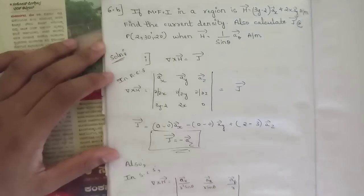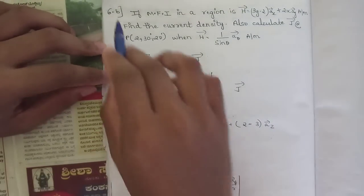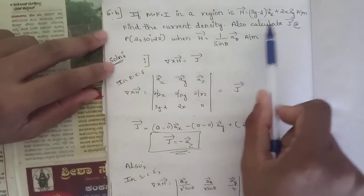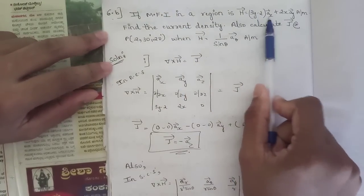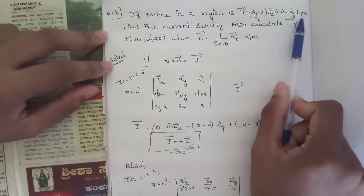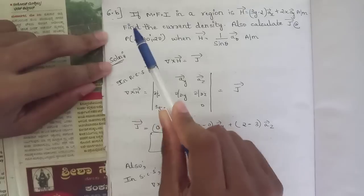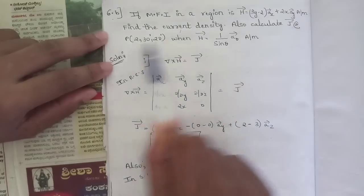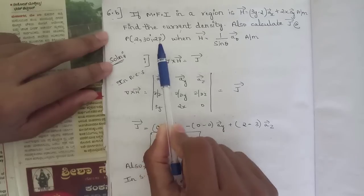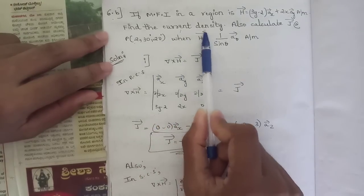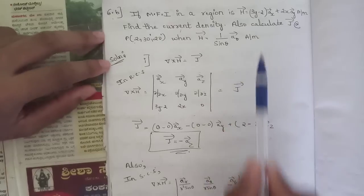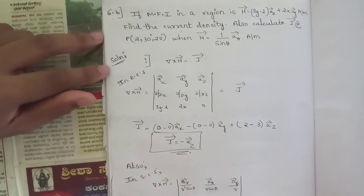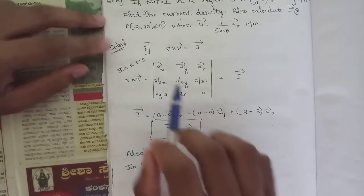Next question 6p: if H = (3y − 2)ax + 2x ay A/m, find the current density J. Also calculate J at the point (2, 30°, 20°) when H = (1/sinθ) aθ A/m. We need to calculate current density in both cases.